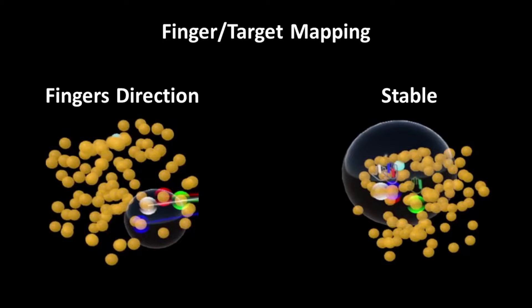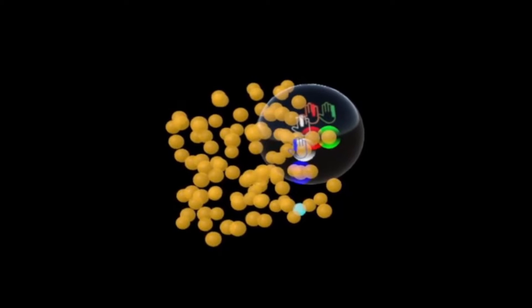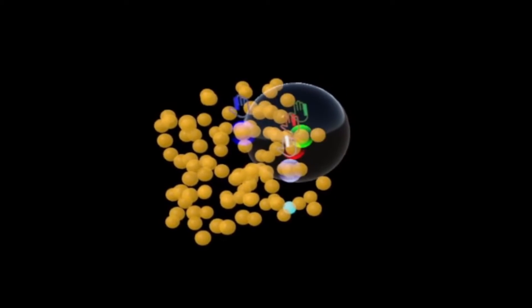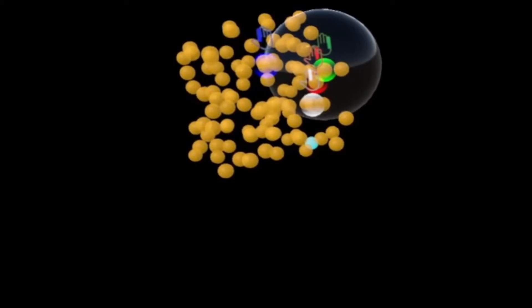We consider two finger target mapping options: following the finger's direction, or stable. With the finger mapping option, colors are assigned according to the horizontal ordering of targets to coincide with the finger's ordering, from index to pinky, with this right-handed user. While this intuitive mapping can help users to quickly determine the associated finger to validate data selection, it can create last-second changes of colors.